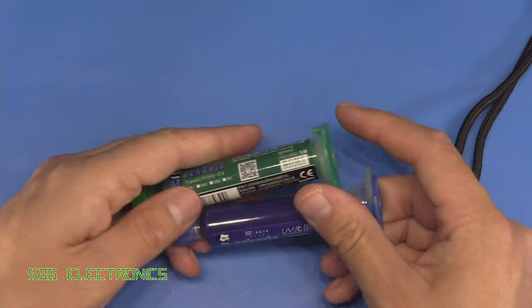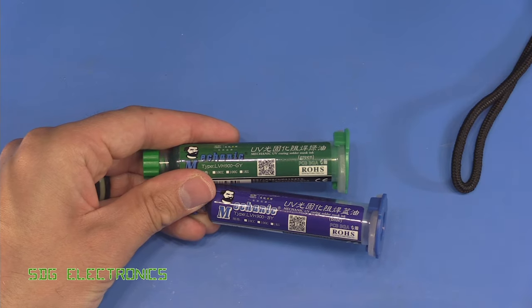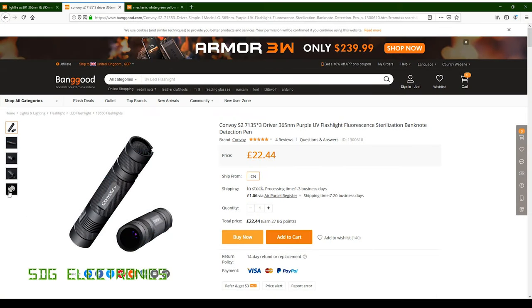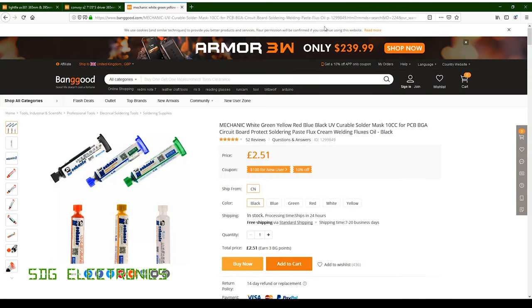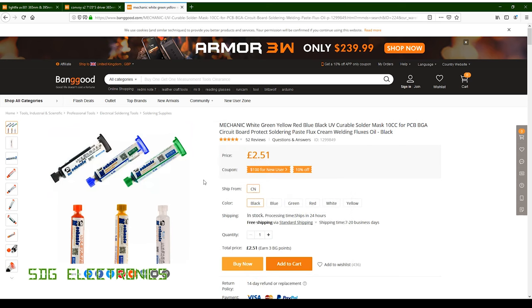Then we'll just have a little look at the Mechanic UV curable solder mask itself. So if we just go to the Banggood website again, basically you can buy this in six different colors. I've got no idea what the shelf life is, it doesn't give any indication, but I would expect that so long as you don't expose it to too much ultraviolet light in its tube it's probably going to last for quite a long time.